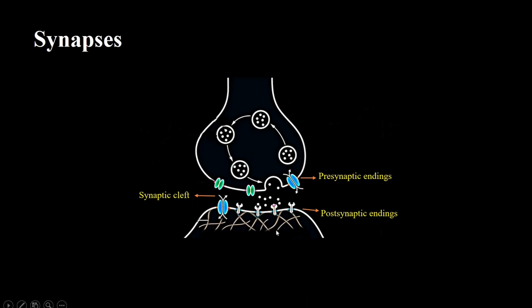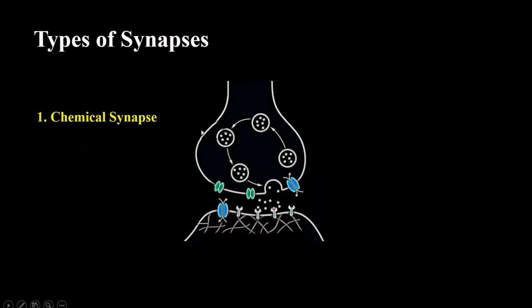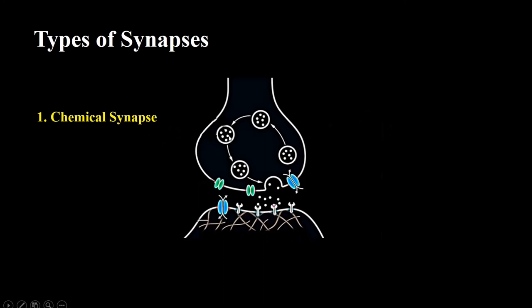So now we will discuss the types of synapses. The first is chemical synapses. In this type of synapse, the electrical activity in the presynaptic neuron triggers the release of chemical messengers which are called neurotransmitters. These neurotransmitters then diffuse across the synapse and bind to the specialized receptors in the postsynaptic neurons.